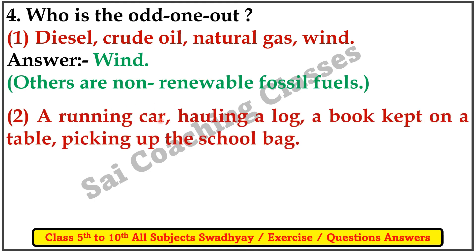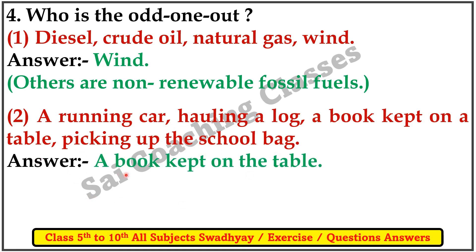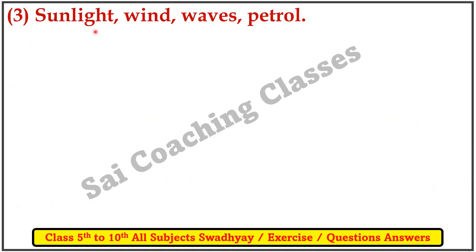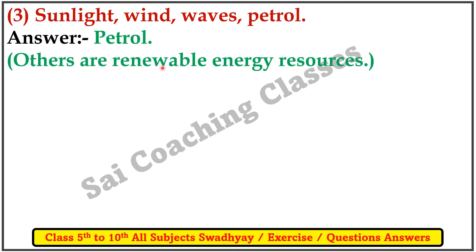Number 2: a running car, rolling a log, a book kept on a table, picking up a school bag. Answer: a book kept on the table. The others are showing displacement and thus possess kinetic energy. Number 3: sunlight, wind, waves, and petrol. Answer: petrol. The others are renewable energy resources.